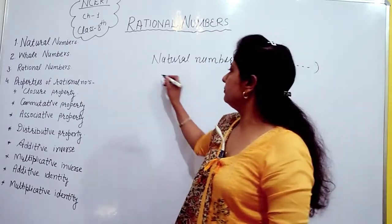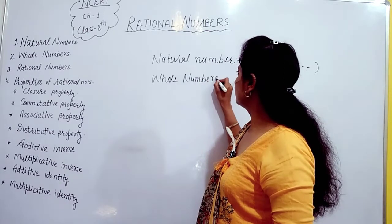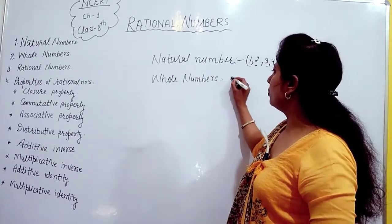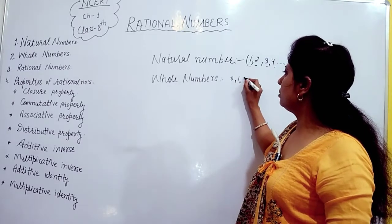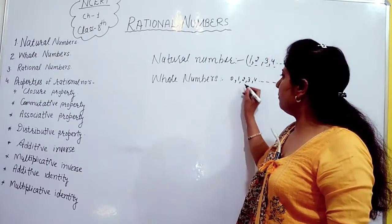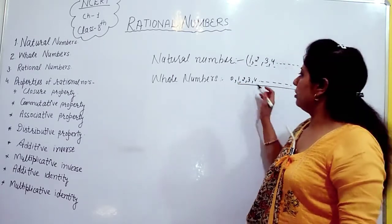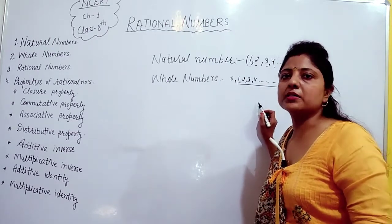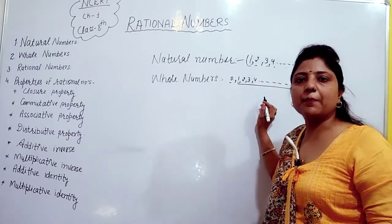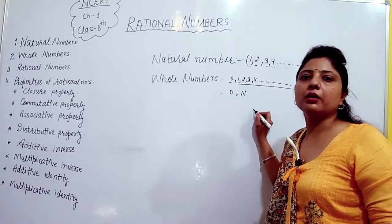Next are Whole Numbers. Whole numbers start from 0 — that is 0, 1, 2, 3, 4 and so on. In whole numbers, 0 is the extra number. Otherwise all of the natural numbers are included. So you can say that whole numbers are 0 and all natural numbers.